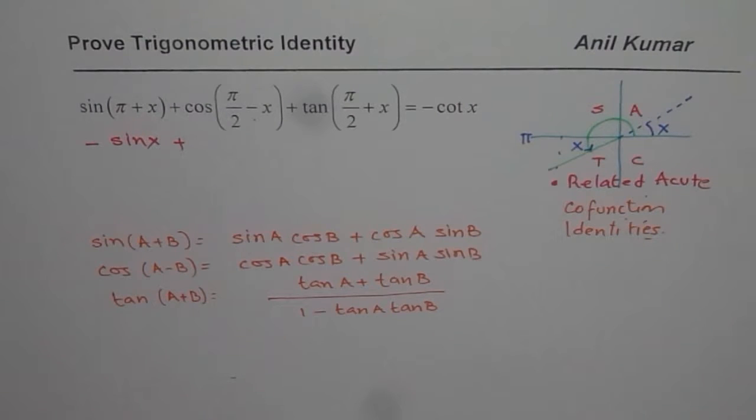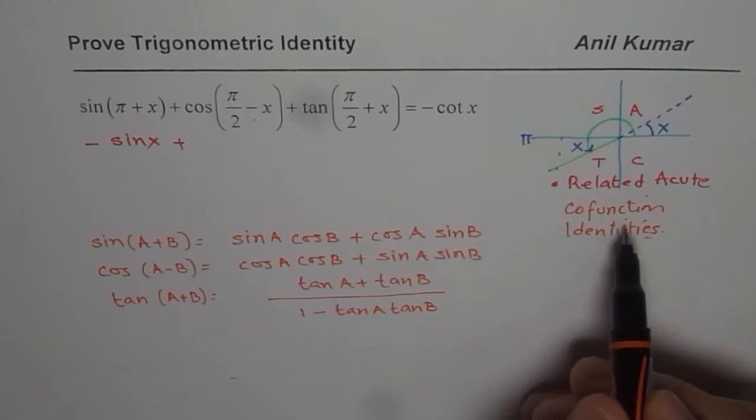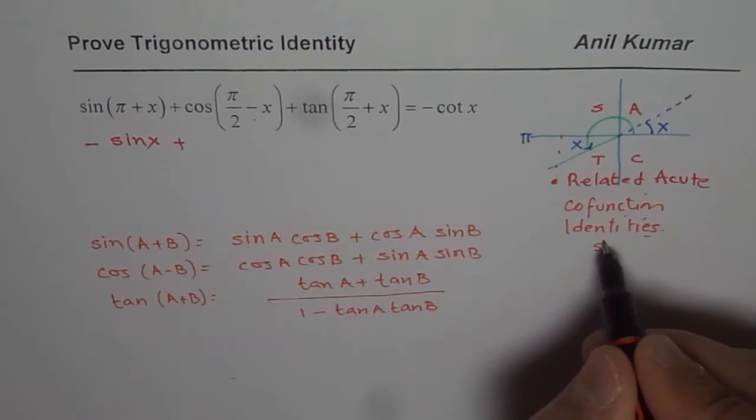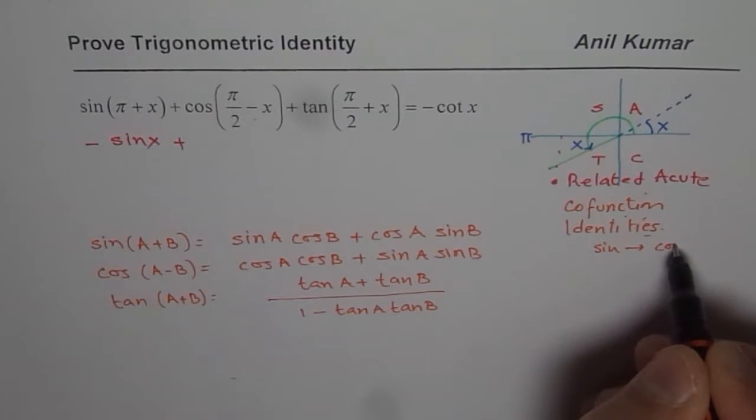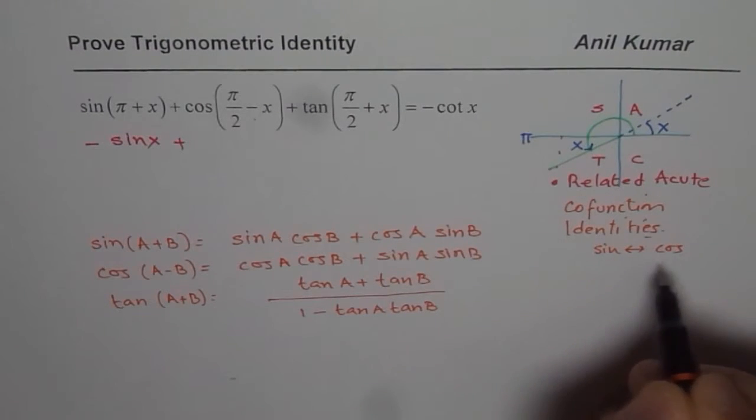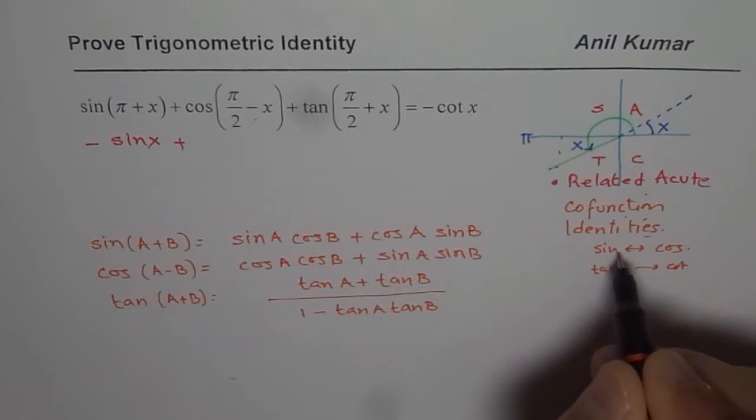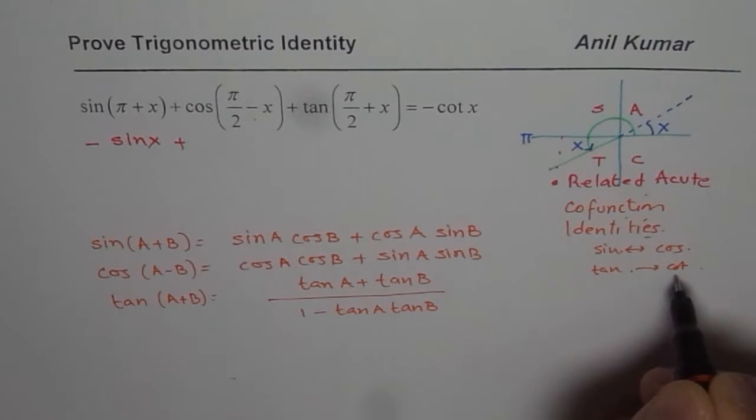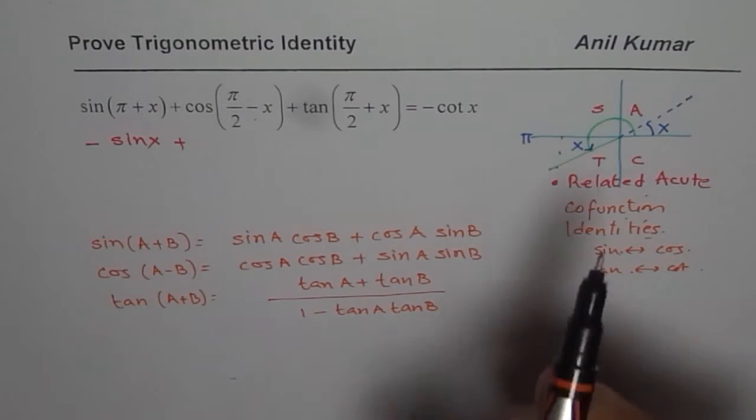Now, let us look into cos of pi by 2 minus x. Now, in this case, I will use co-function identity. Co-function is when sine is written in terms of cosine or vice versa. Even tan will be written in terms of cotangent of x values, of course, or any angle, or vice versa.